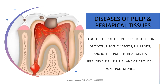Next topic is diseases of the pulp and periapical tissues. You should know the sequelae of pulpitis, internal resorption of the tooth — also called pink tooth of Mummery — what is a phoenix abscess, pulp polyp or chronic hyperplastic pulpitis, anachoretic pulpitis, the difference between reversible and irreversible pulpitis and their classical clinical findings, what A-delta fibers and C-fibers are and what types of pain each is responsible for — very important — the four zones of the zone of reaction in caries, and lastly, pulp stone.